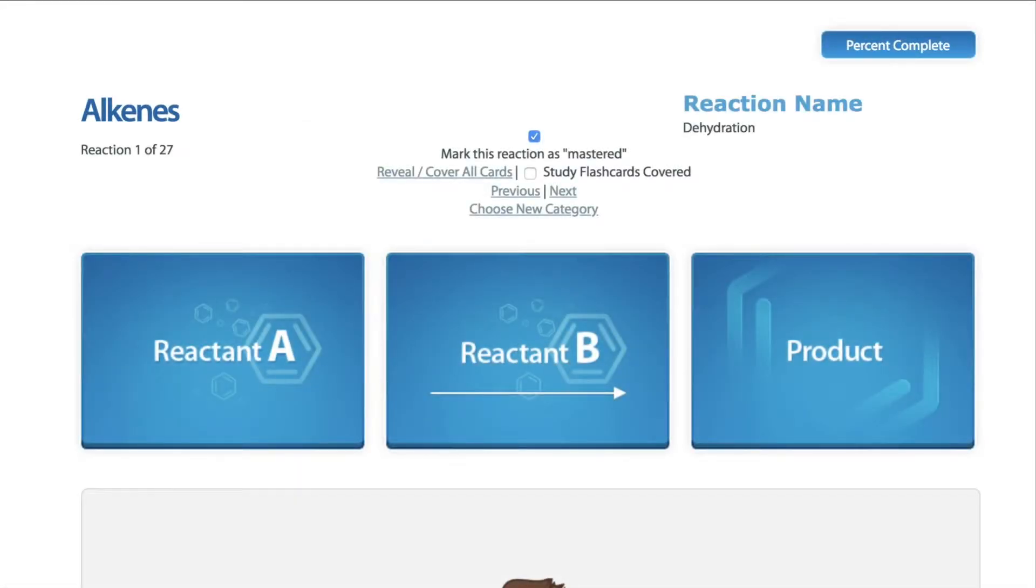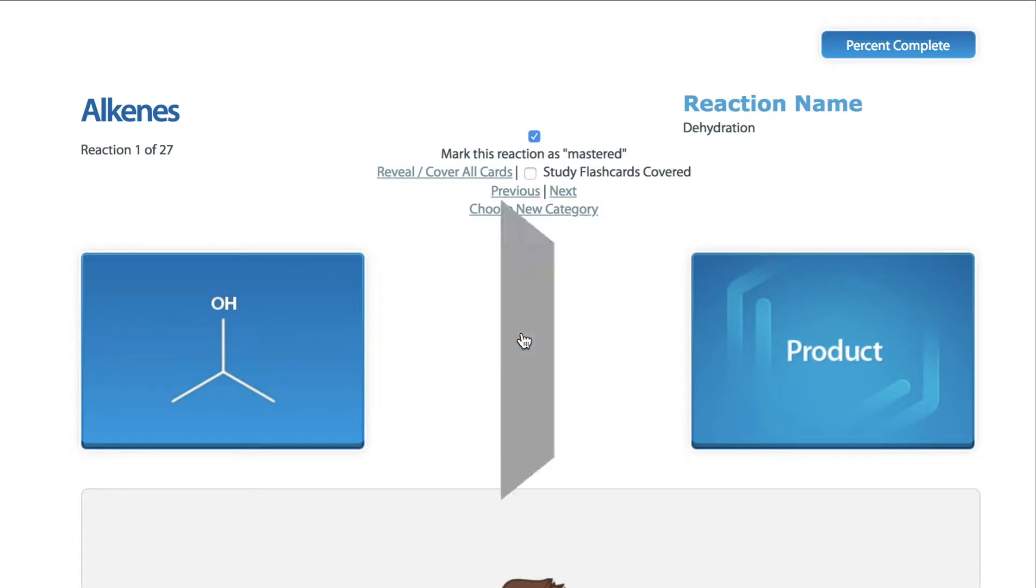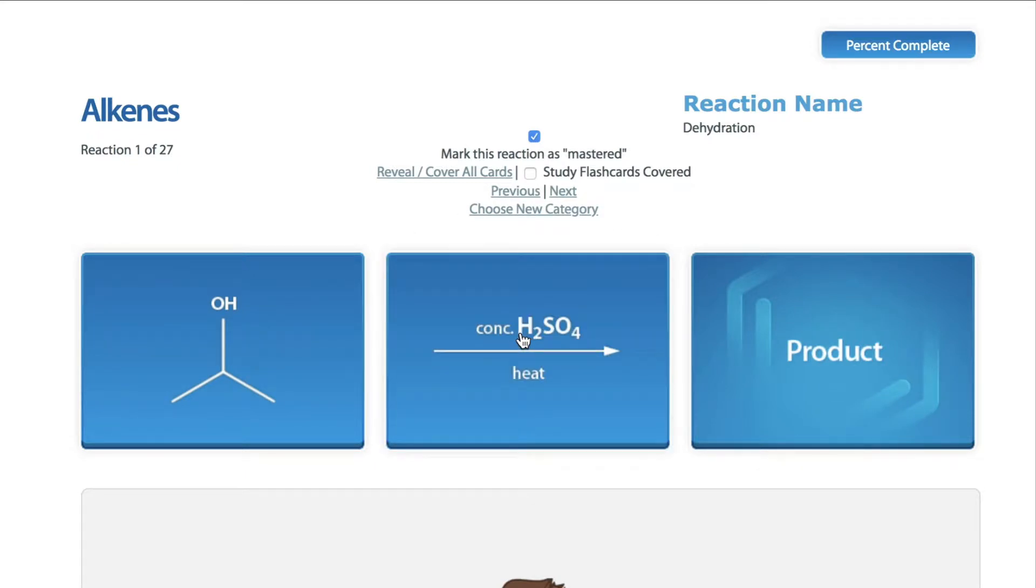Welcome to StudyOrgo's edition of the Explanation of a Dehydration Reaction Mechanism. In this reaction, an alcohol is reacted in concentrated acids such as sulfuric acid and refluxed with heat to form the product alkene.